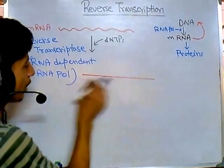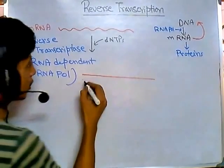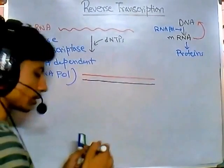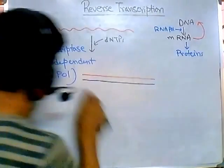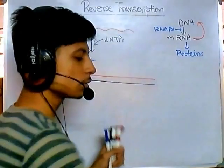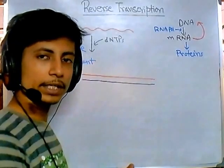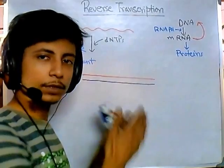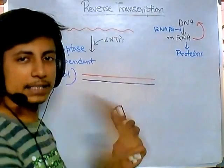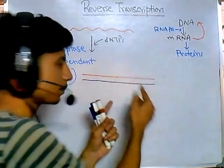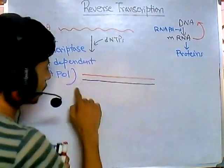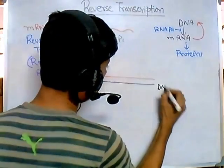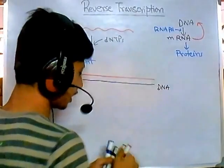Reverse transcriptase does require priming for this process. If you are doing recombinant DNA technology experiments, you need to add a primer. However, if you are looking at viral replication, the virus provides priming through bulging of the mRNA from outwards. So a DNA strand is synthesized from the mRNA template.